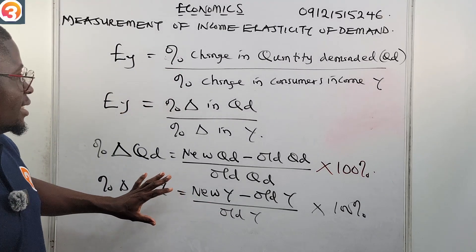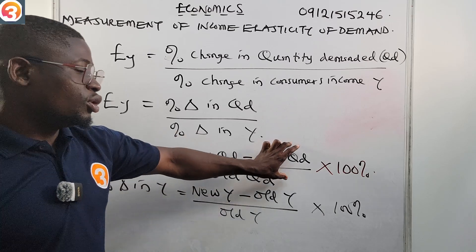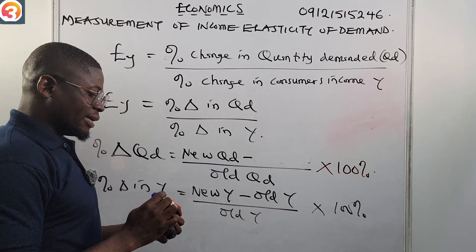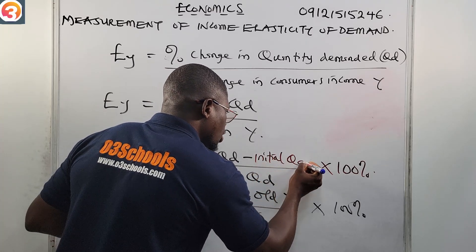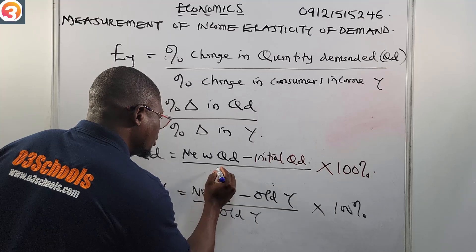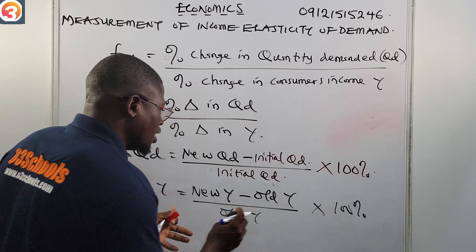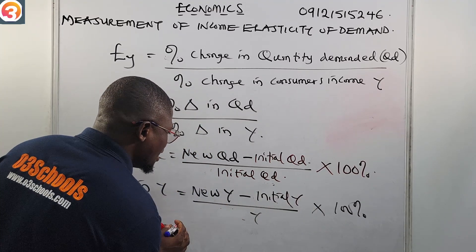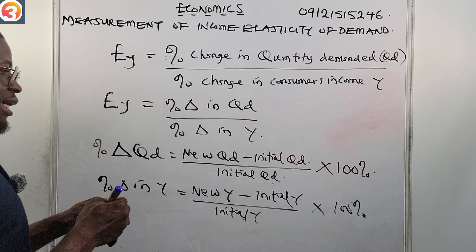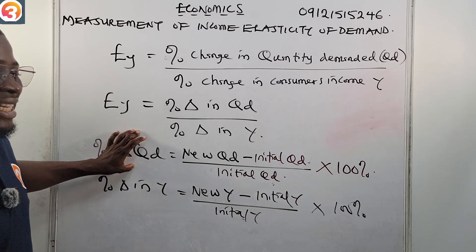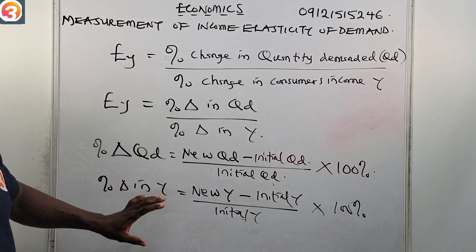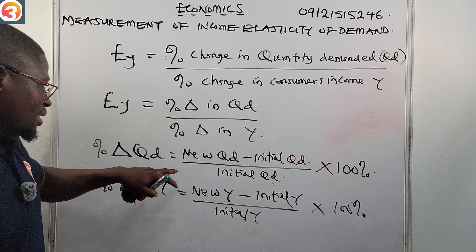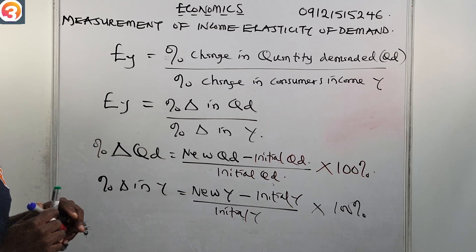For percentage change in consumer's income, percentage change in Y equals new Y minus old Y, over old Y, times 100 percent. We can also say initial instead of old — initial QD and initial Y — to stay consistent with the notation we used for price elasticity. So EY equals percentage change in QD over percentage change in Y: simply this over that.